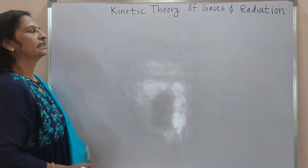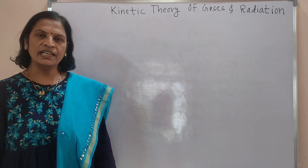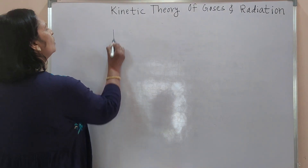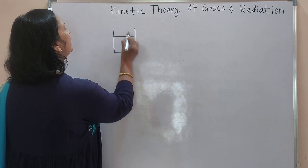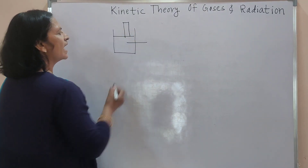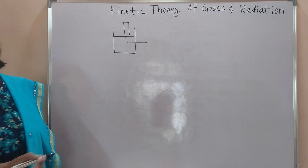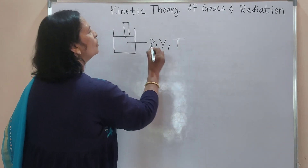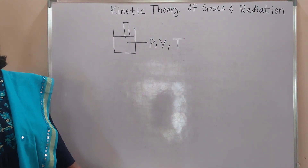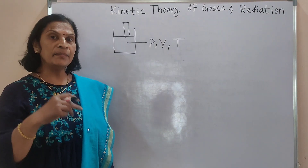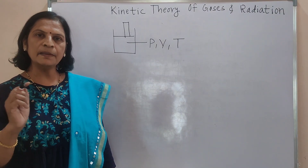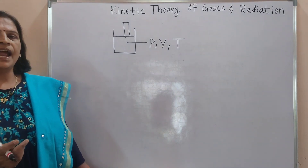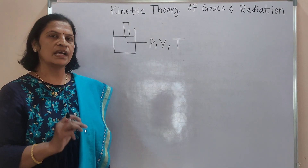We know that the three states of matter — they are solid, liquid, and gases. Suppose a gas enclosed in a cylinder fitted with a piston; that gas has three variables: pressure, volume, and temperature. Out of these three variables, one variable remains constant and the remaining two are either directly proportional or inversely proportional to each other, and then three gas laws are formed.